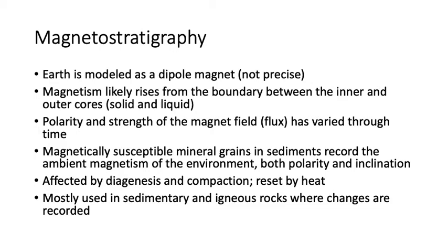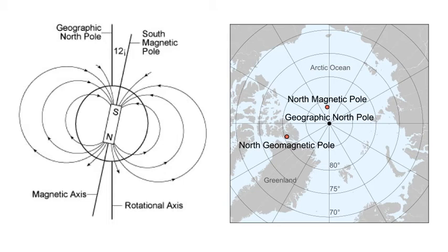Compaction can affect the magnetic signature by flattening the inclination, without changing the orientation to north but changing the apparent position relative to north. Magnetostratigraphy is used mostly in sedimentary and igneous rocks. The next slide shows the magnetic dipole running through the earth, with south and north shown as magnetic axes, slightly offset from the rotational axis. There is a north magnetic pole and a north geomagnetic pole, which are distinct from the geographic north pole.